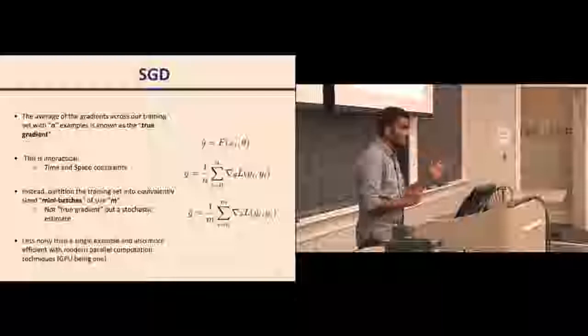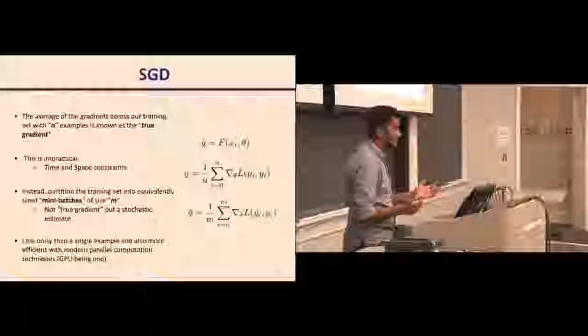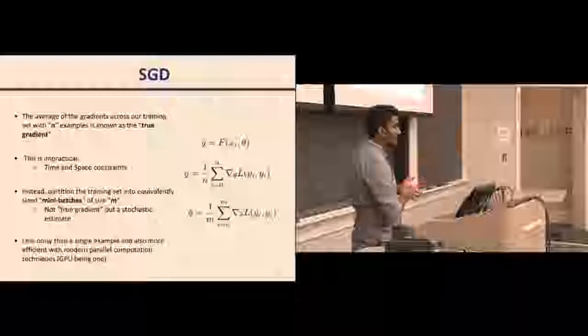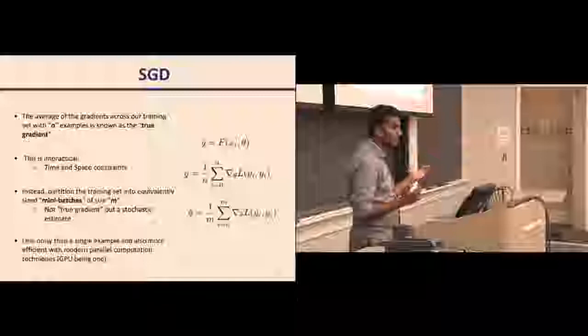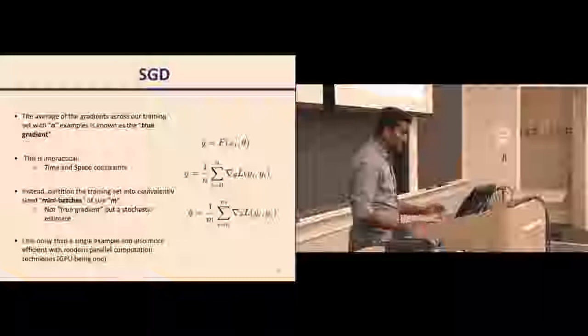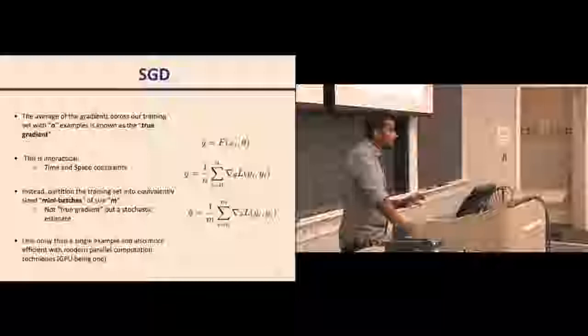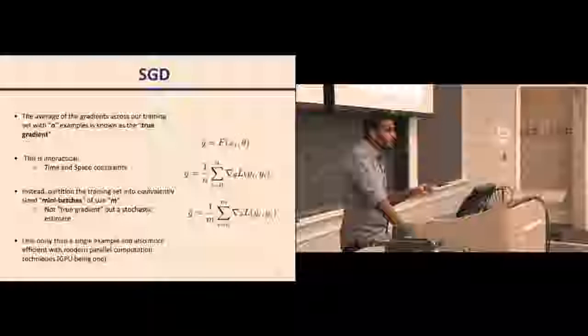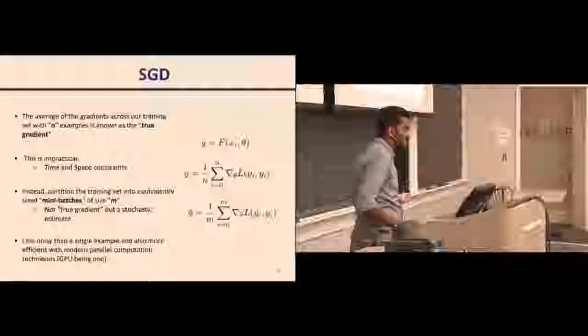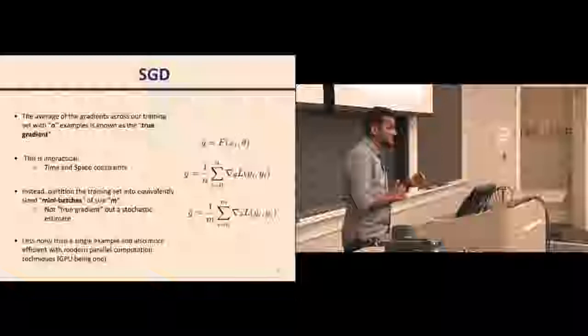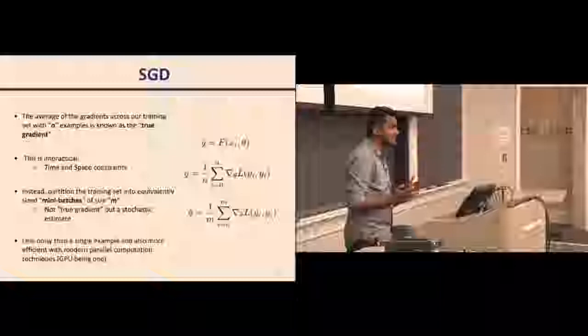Forward propagating the entire dataset together is impractical because the datasets you'll encounter are generally very large. It is not feasible to feed the entire dataset at once — for one, it will not even load in memory. So instead of finding true gradients, what we try to do is find a stochastic estimate of the gradients. By stochastic estimate, we randomly sample a small subset of the data and keep forward propagating that, updating our gradients based on the subset we put into our model.